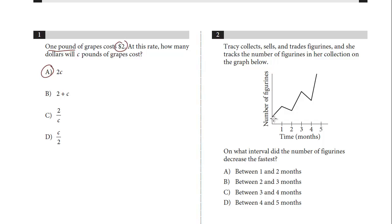On what interval did the number of figurines decrease the fastest? So decrease the fastest is where it's descending the steepest. It's going down from here to here, but this is a little flatter than this. So this is the interval where it is decreasing the fastest. It's between 3 and 4. The answer is C.